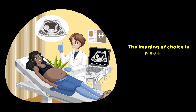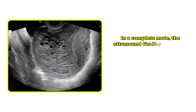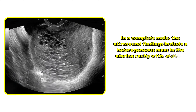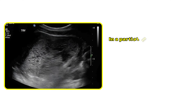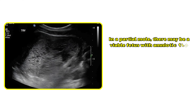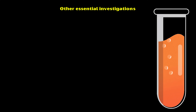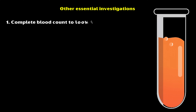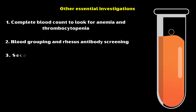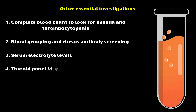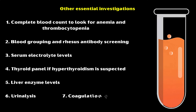The imaging of choice in a suspected molar pregnancy is a pelvic ultrasound. In a complete mole, the ultrasound findings include a heterogeneous mass in the uterine cavity with multiple anechoic spaces, referred to as a snowstorm appearance. In a partial mole, there may be a viable fetus with amniotic fluid, and the placenta may be enlarged with cystic spaces. Other essential investigations include a complete blood count to look for anemia and thrombocytopenia, blood grouping and rhesus antibody screening, serum electrolyte levels, thyroid panel if hyperthyroidism is suspected, liver enzyme levels, urinalysis, and coagulation profile.